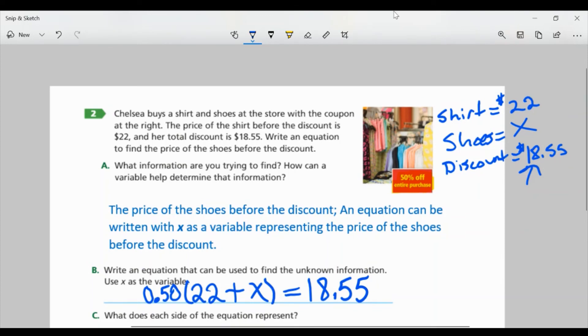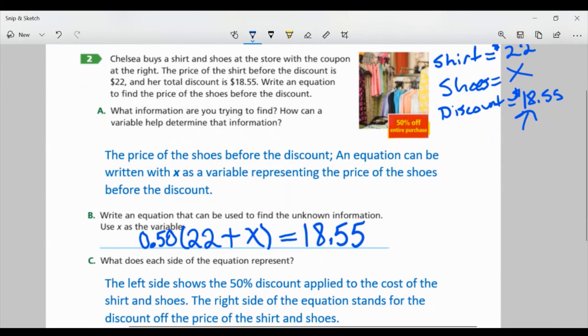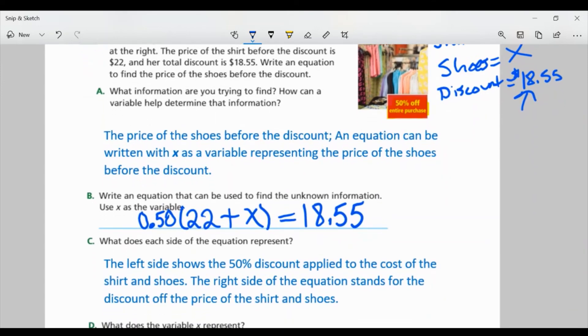All right, so let's look at part C. What does each side of the equation represent? Well, I know the left side of the equation shows the 50% discount applied to the cost of the shirt and shoes. The right side of the equation stands for the discount off the price of the shirt and shoes.